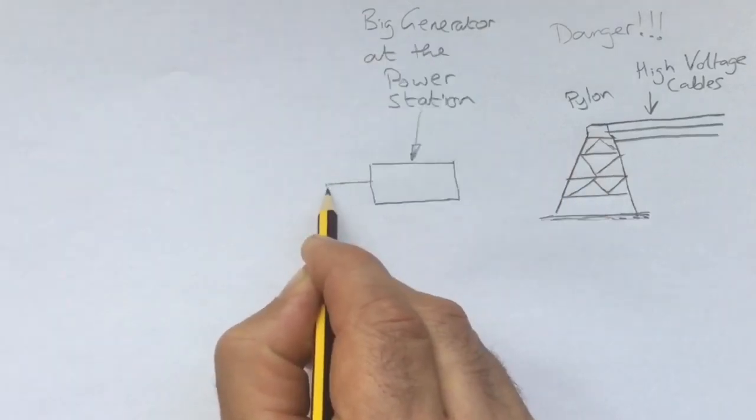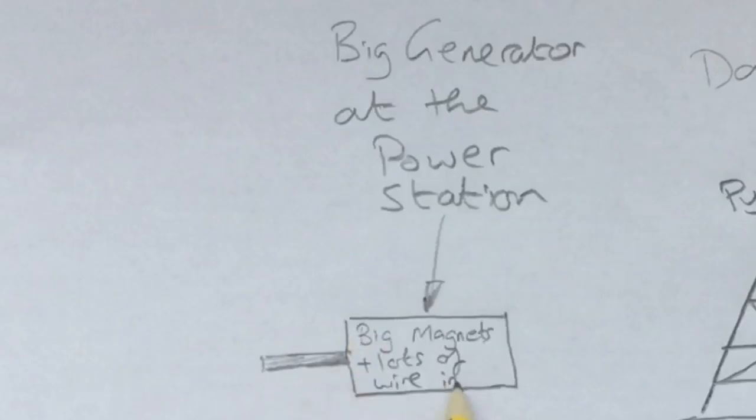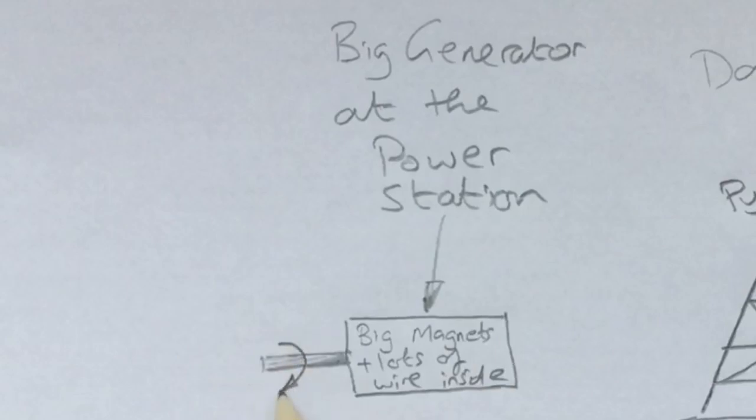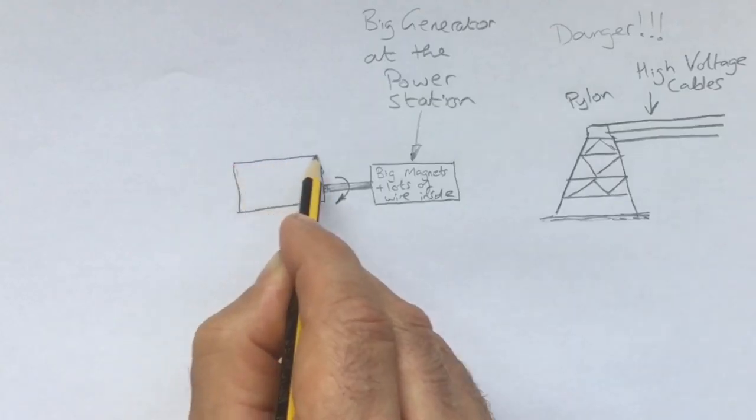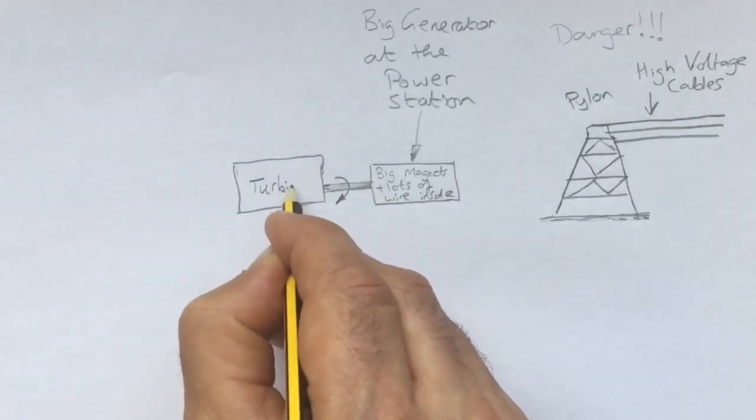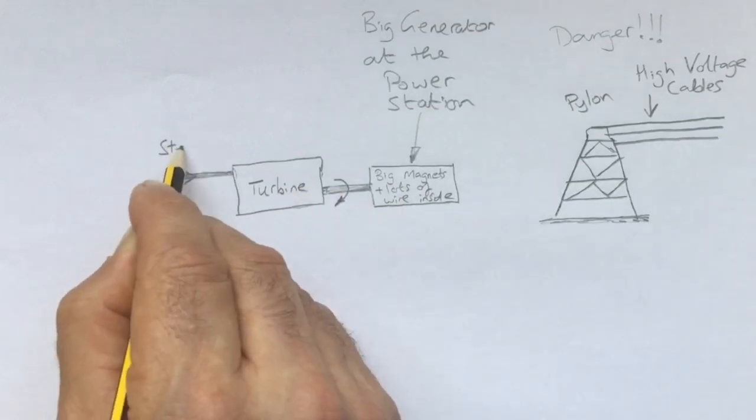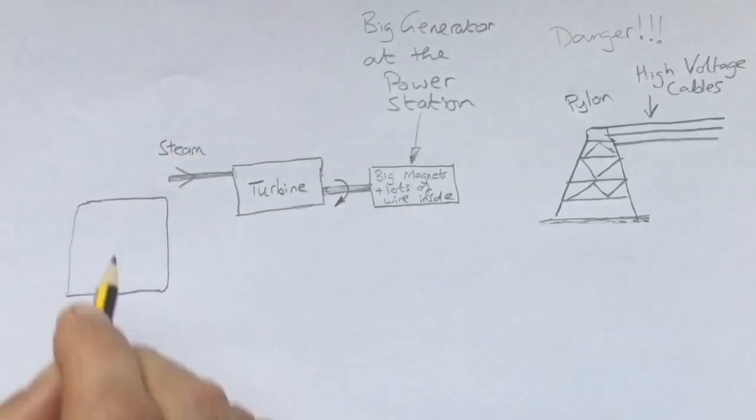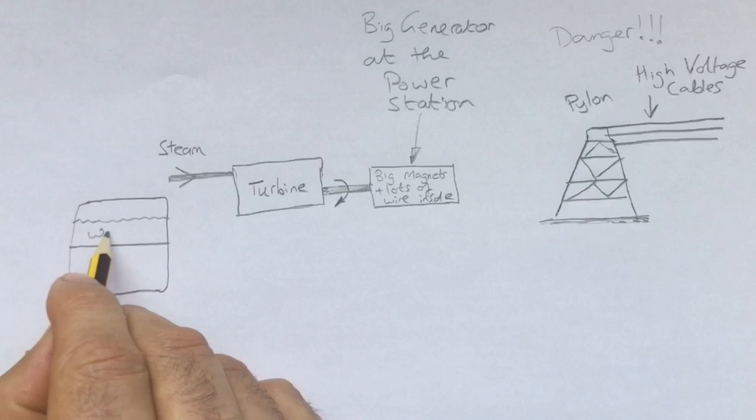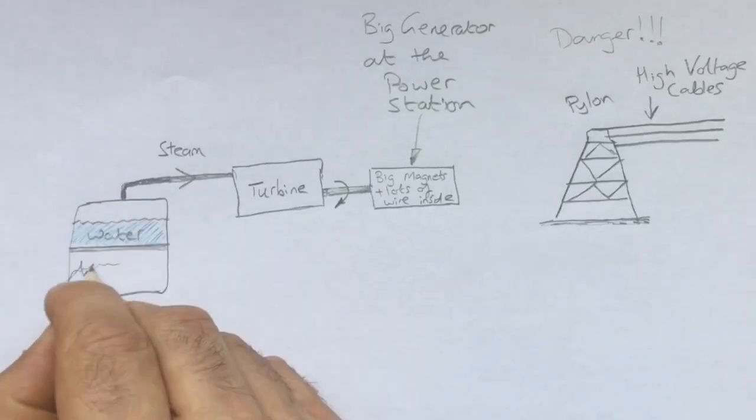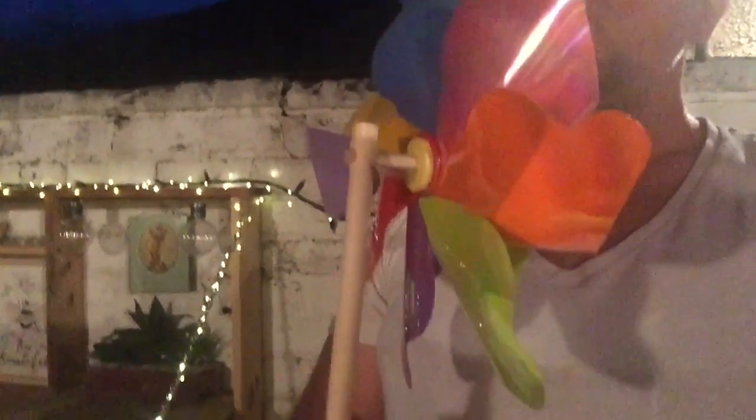This generator is just like the one I showed you in the previous clip that was turning by hand, except it's got more turns of wire and stronger magnets so it can generate far more electricity. Another difference is that instead of turning it by hand, there's something called a turbine that causes a generator to turn. The turbine is powered by high-pressure steam, in a similar way to how I blow this wind turbine round.